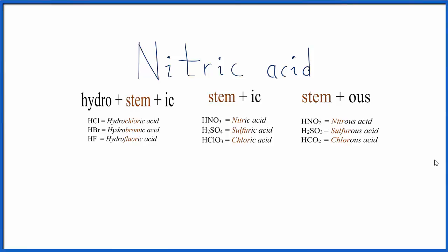To write the name for nitric acid, HNO3, we'll use this table here to guide our work. We can see we don't have hydro in front of nitric here, so it's not going to be this type of acid.